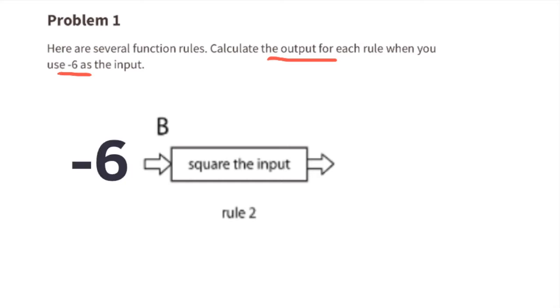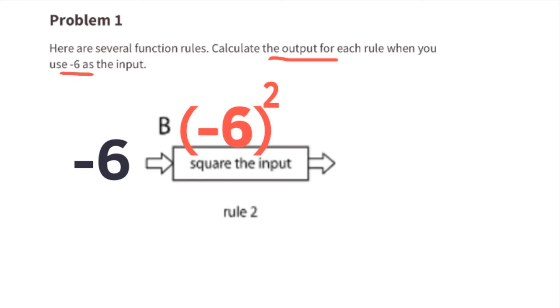B. Negative 6 is the input. The function is square the input. So negative 6 squared, or negative 6 times negative 6. The output is 36.